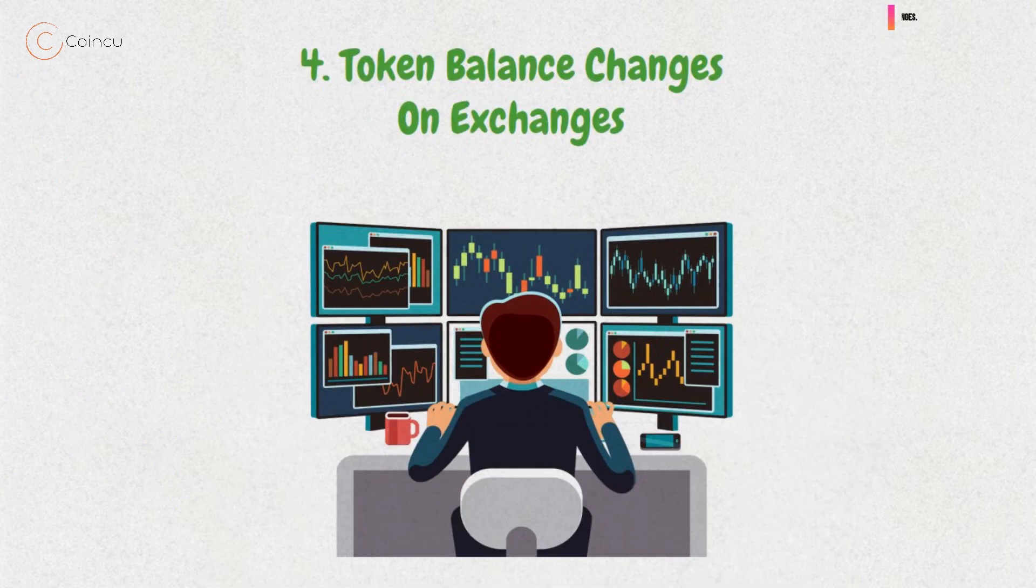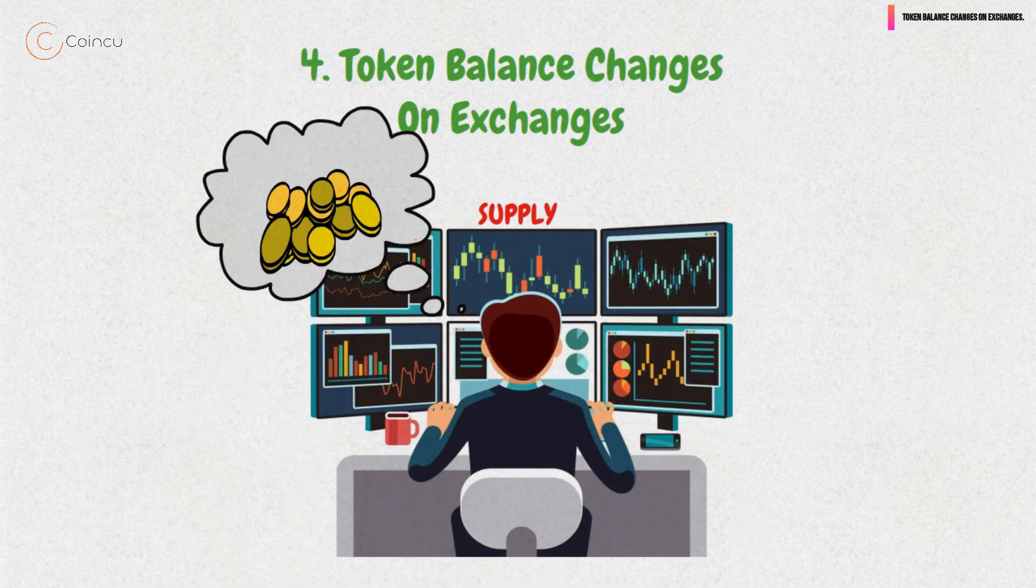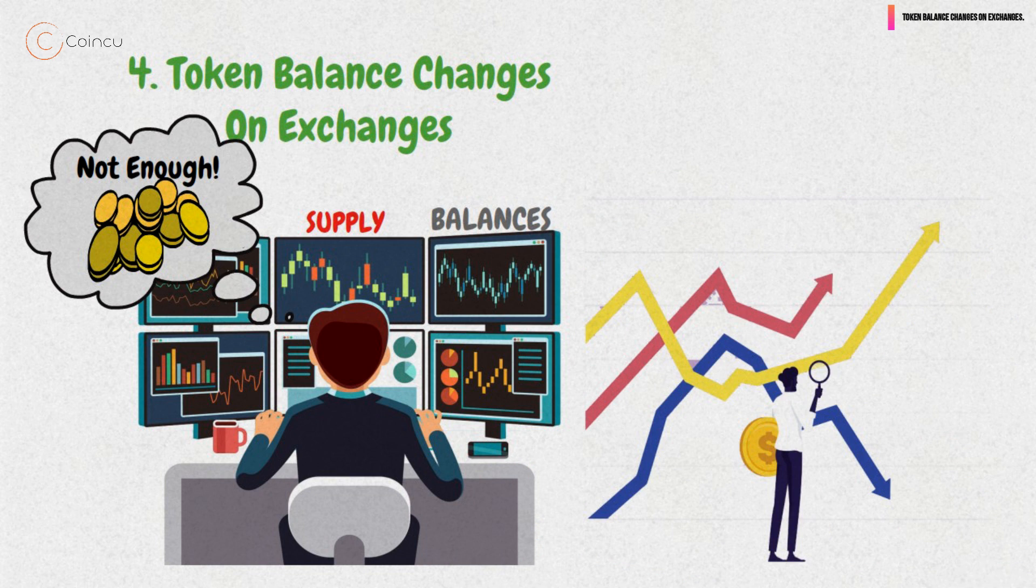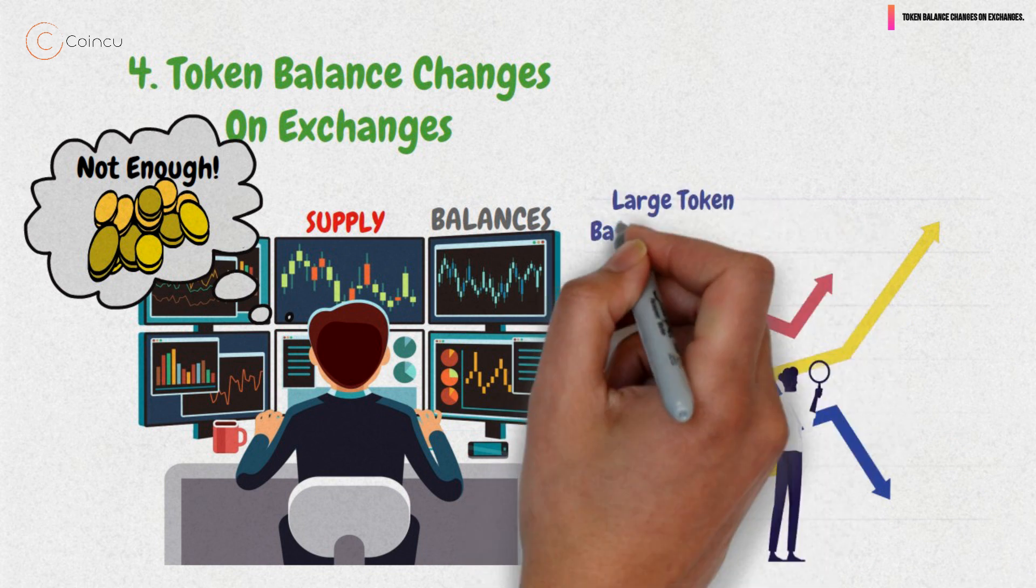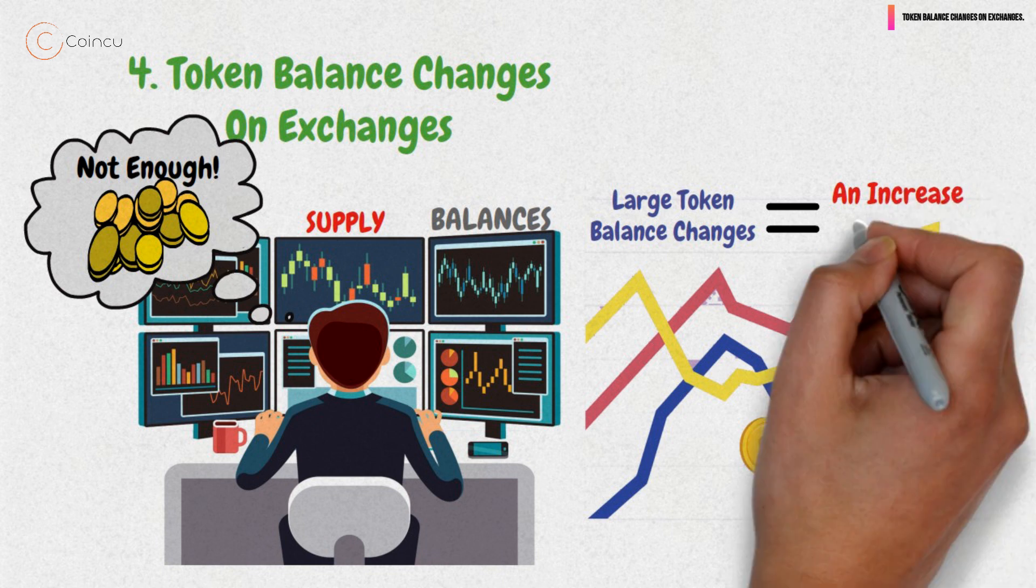4. Token Balance Changes on Exchanges. We already know that keeping an eye on token supply can be useful. But looking at only the token balances may not be enough. It can also be helpful to look at recent changes in those balances. Large token balance changes on exchanges can often signal an increase in volatility.